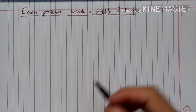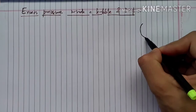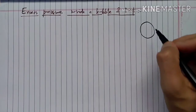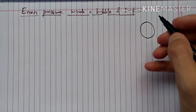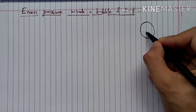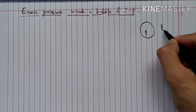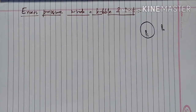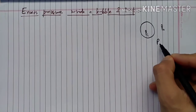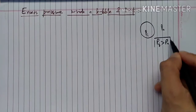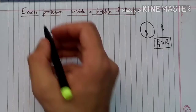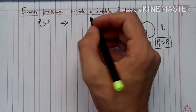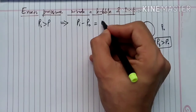Suppose we have a bubble as an example. From inside the bubble, the pressure is greater. So inside pressure minus outside pressure — this is called excess pressure.